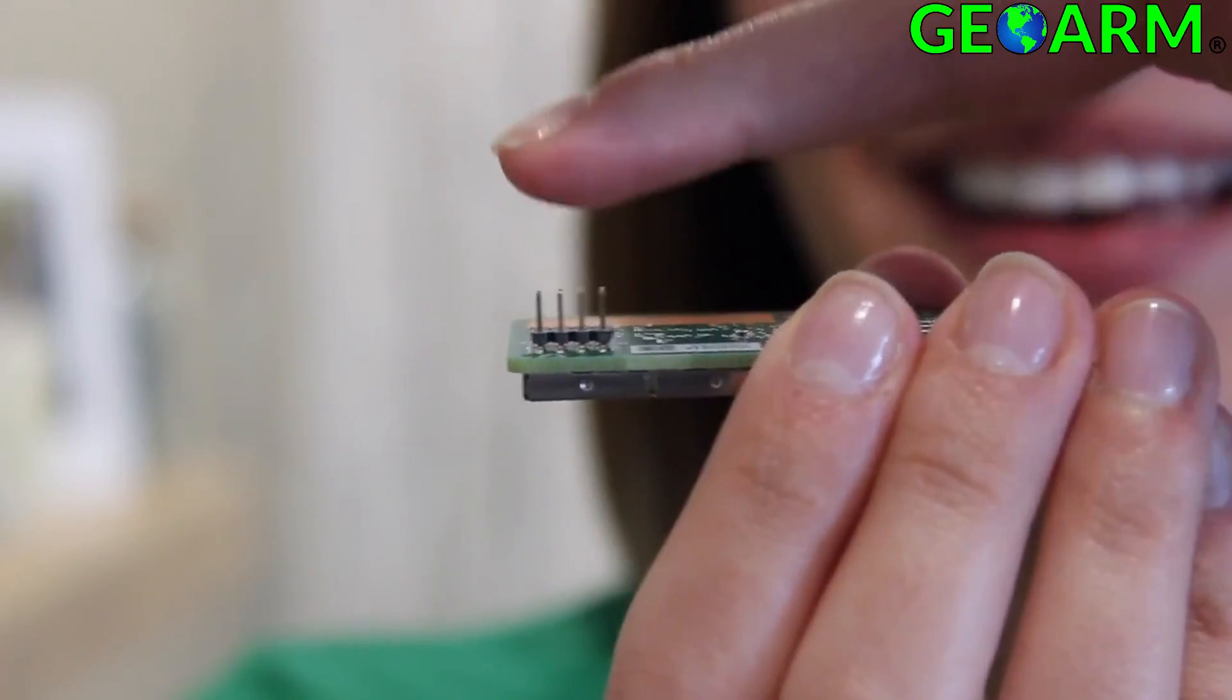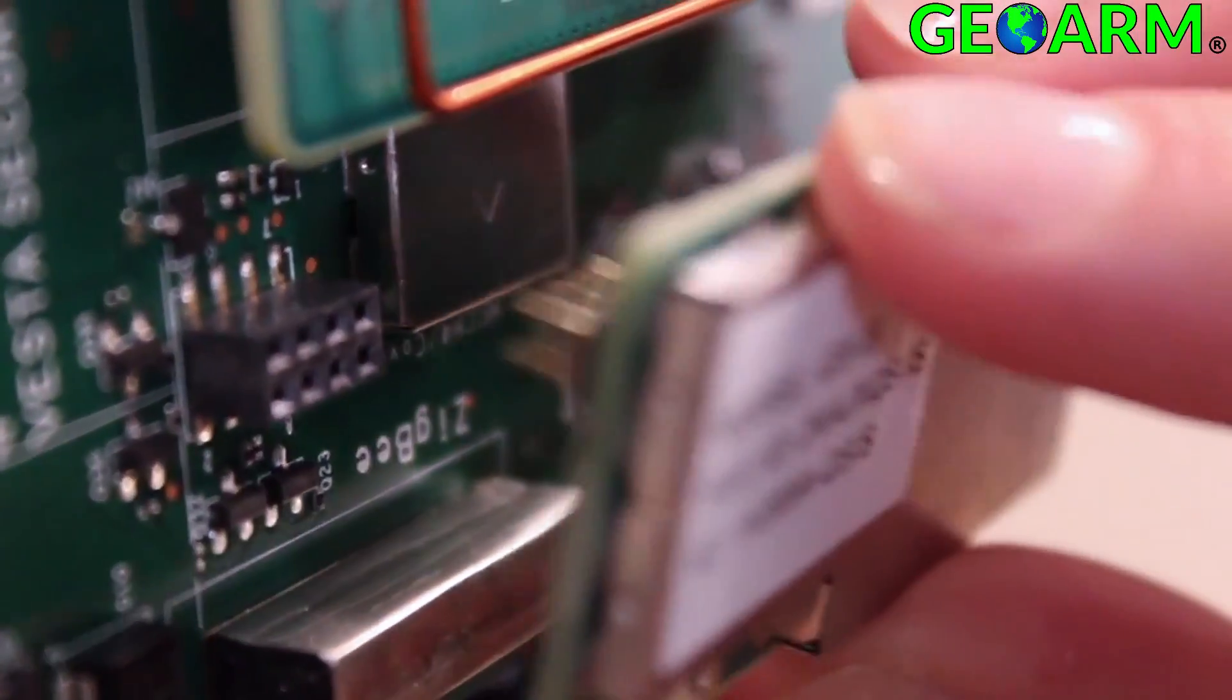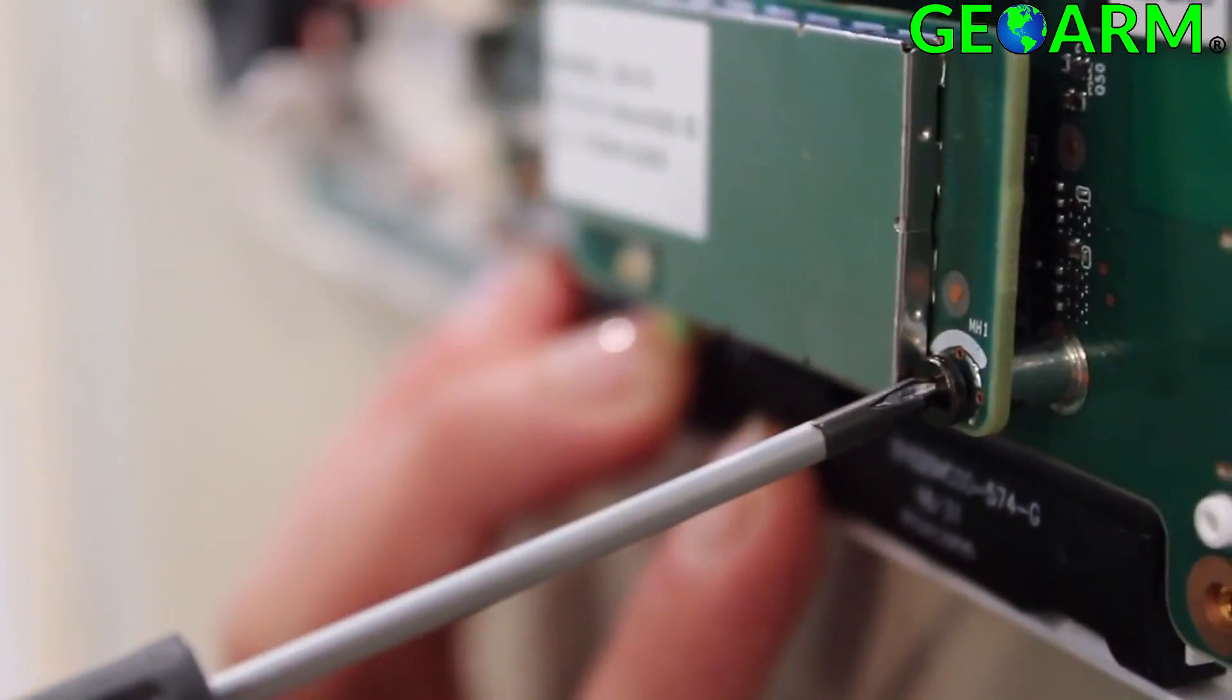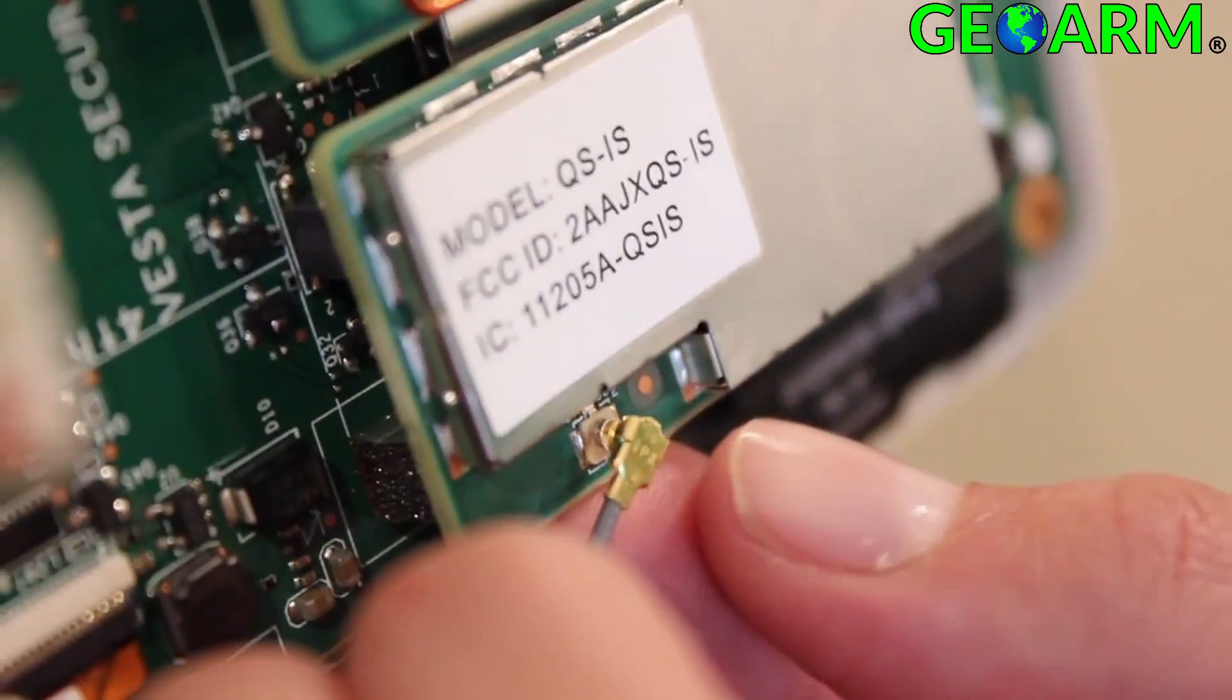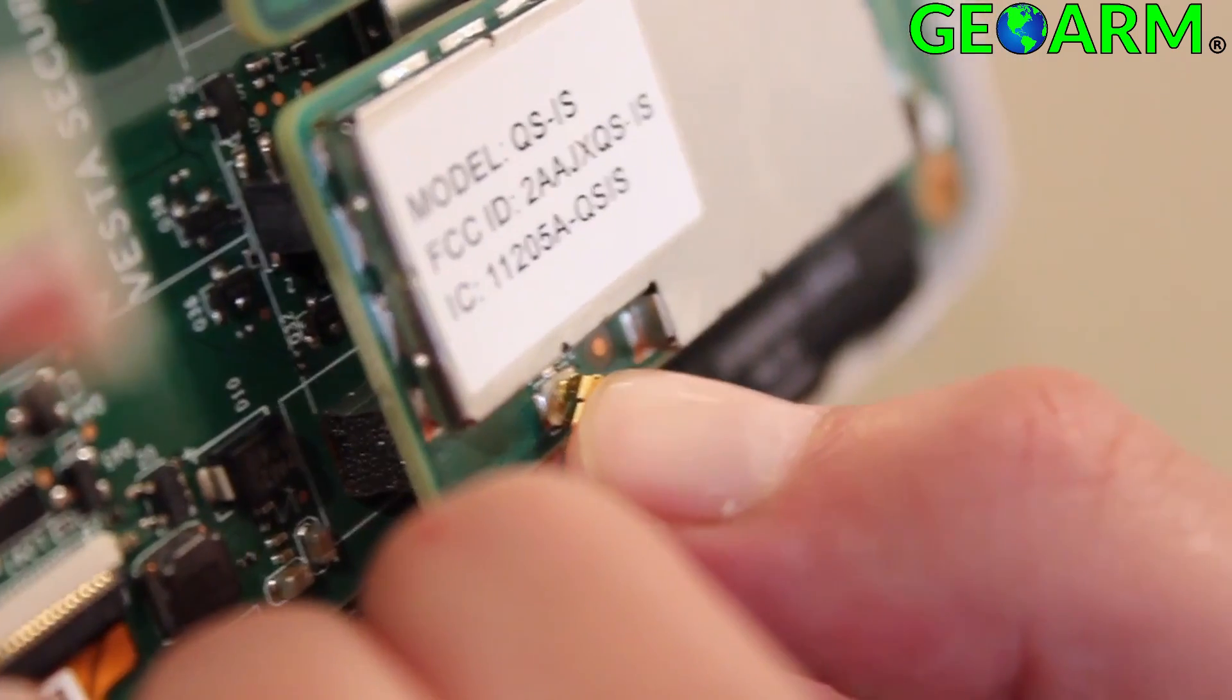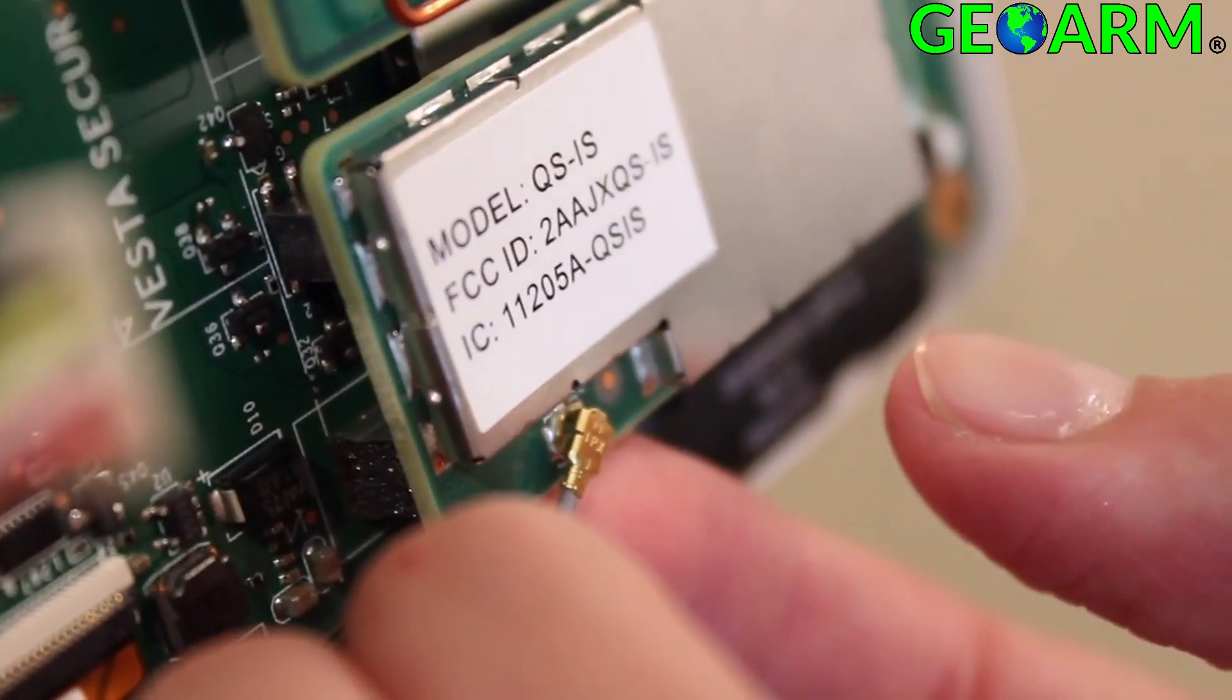Next line up the 8-pin connector and press the daughter card into place by pushing it down all the way. Lock it into place using the provided screw. Using a finger or thumb, carefully press the antenna connector into place on the daughter card.